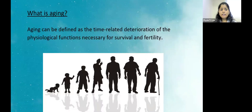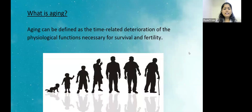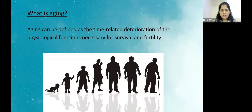What is aging? Aging can be defined as the time-related deterioration of the physiological functions necessary for survival and fertility. So there is this time-related deterioration of physiological functions as we age, leading to changes in the system.